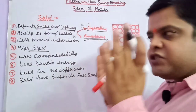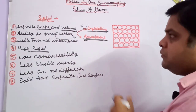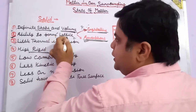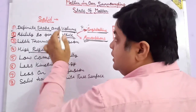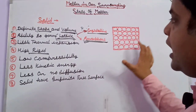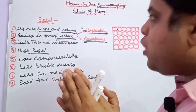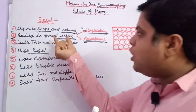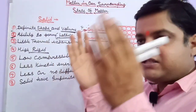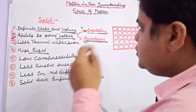Solids have a fixed shape and a fixed volume that does not change. Another condition is that solids can form a lattice. When solid particles are arranged in a certain pattern, that arrangement is called a lattice. If particles are arranged in a certain definite pattern, that condition is called a lattice.